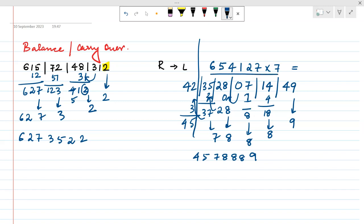So the product of this number with 7 results to this. This is the technique, the balance technique or carryover technique, used for multiplication of numbers. This is the result for you.